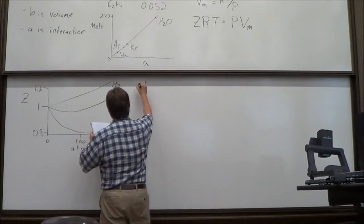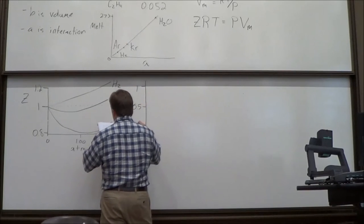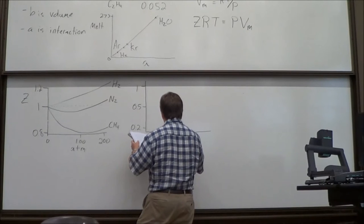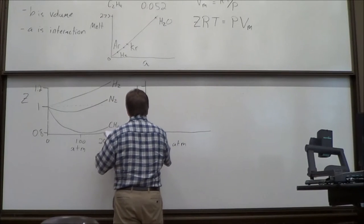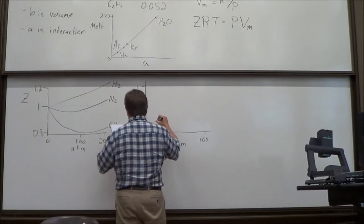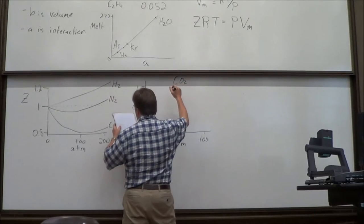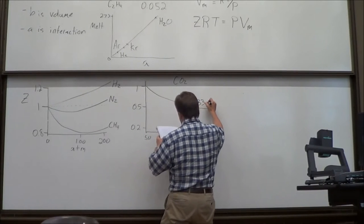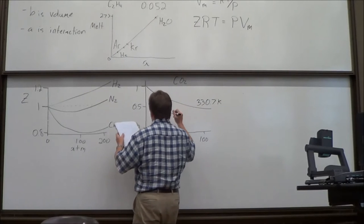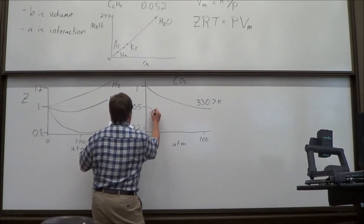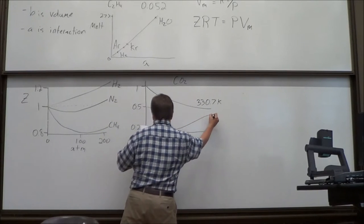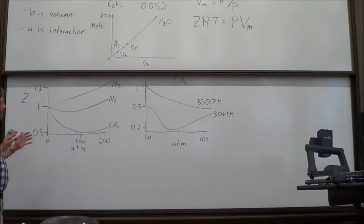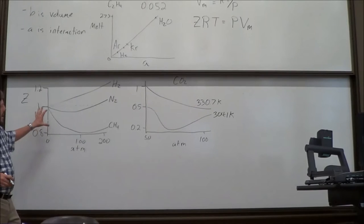I'm going to do pressure from 50 to 100 atmospheres - which is really kind of scary - and this is going to be for a single gas, CO2. I got these out of a different book. My point is here's how Z changes with pressure. I can see a trend.